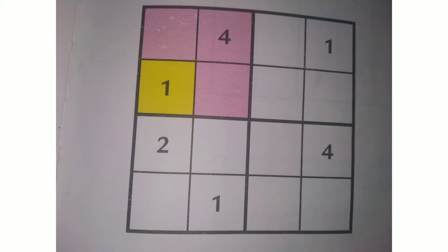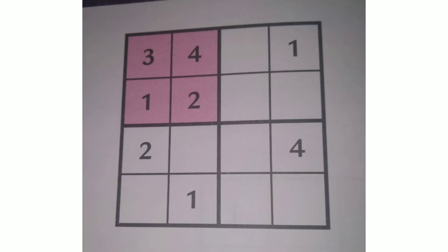Now in this mini grid we have the numbers 1 and 4, but we still need to write 3 and 2. As you can observe, 2 is present in the first column, so in the first column of the mini grid we can't write 2. So 2 will come in the second column of the second row, and the only remaining element, 3, will come in the first column — and like this, the first mini grid is done.